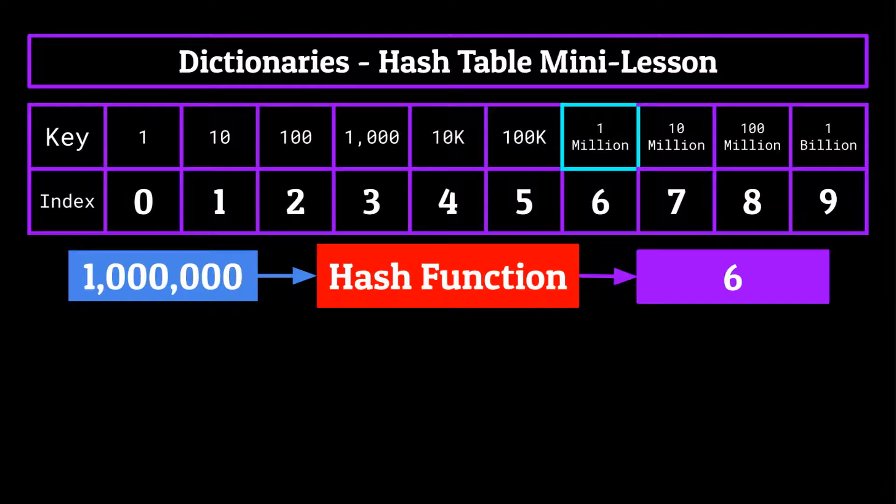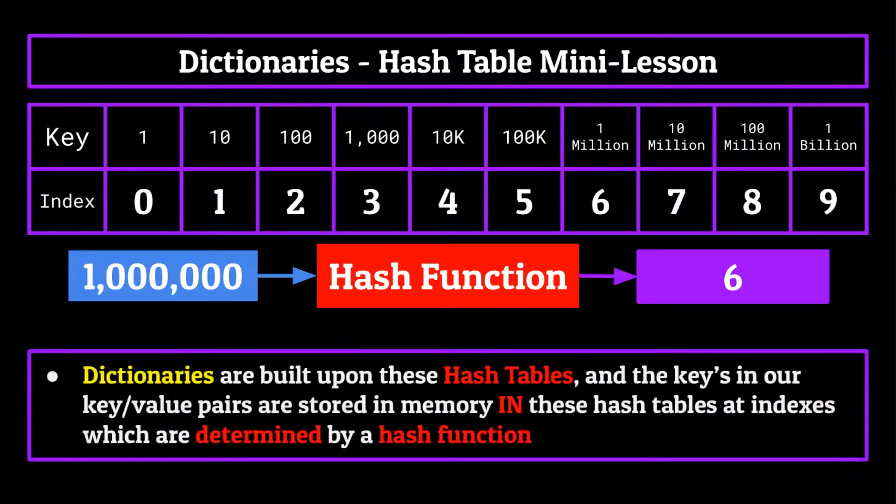Now all this information may be pretty confusing, I know, but in layman's terms, for this video in this series, all I want you to be able to comprehend is that dictionaries are built upon these hash tables, and the keys in our key value pairs are stored in memory in these hash tables at indexes, which are determined by a hash function. And if you can understand that, you've got a pretty good base for understanding hash tables.